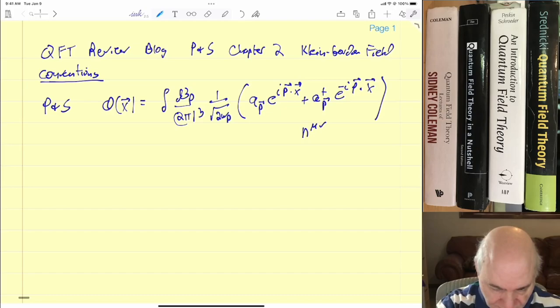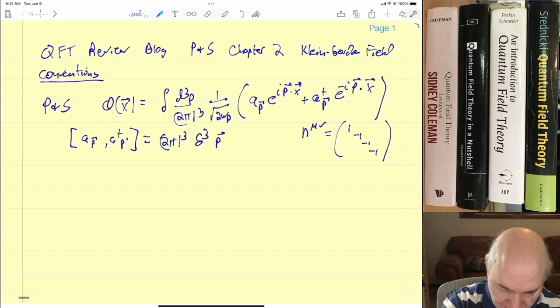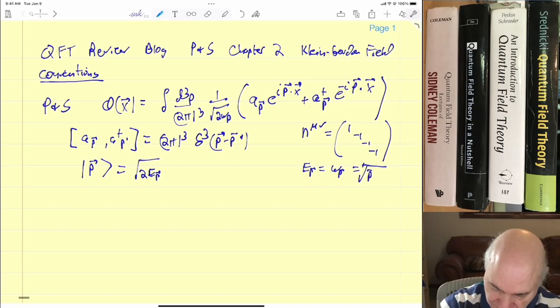For Peskin and Schroeder, the commutation relations are kind of funny looking. They have a (2π)³ and a δ³(p-p'). So if you had like a (2π)^(3/2), you wouldn't have this (2π)³ there. They define their states |p⟩ as being the square root to Ep, Ep equals ωp equals the square root, it's always plus, square root of p² plus m².